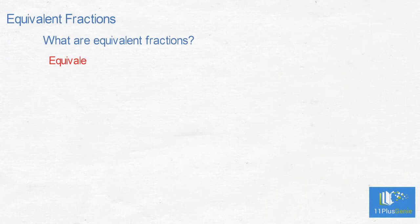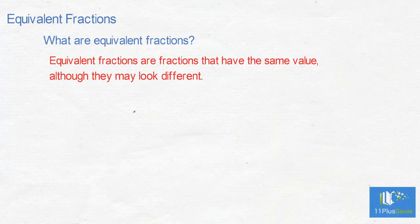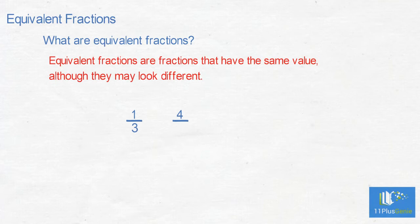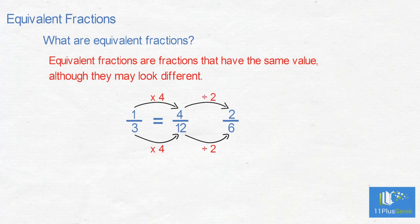Equivalent fractions. What are equivalent fractions? Equivalent fractions are fractions that have the same value, although they may look different. If we look at the fractions one-third and four-twelfths, we see that if we times the three by four we get twelve, and if we times the one by four we get four. These two fractions are therefore equal. If we add a third fraction, namely two-sixths, we see that twelve divided by two equals six and four divided by two equals two. Therefore, four-twelfths equals two-sixths. These three fractions are equivalent to each other.